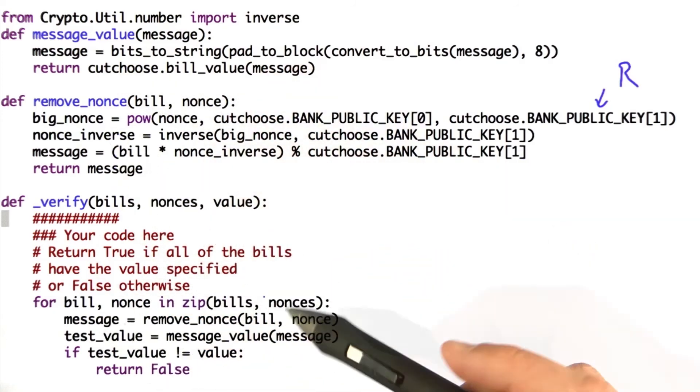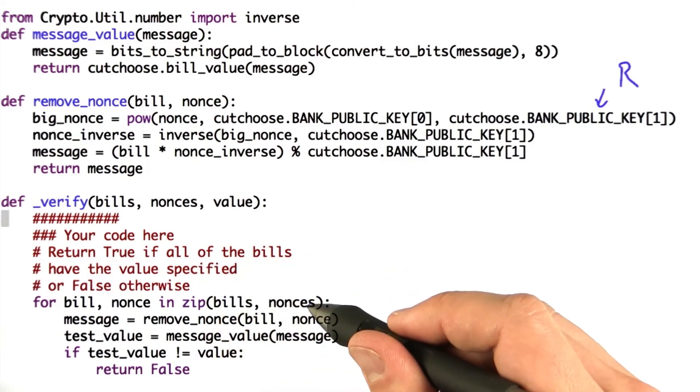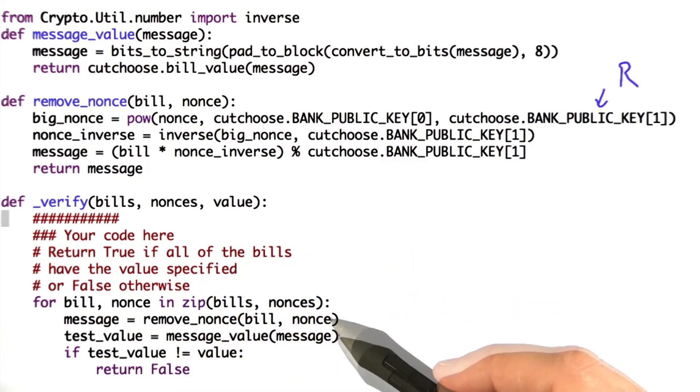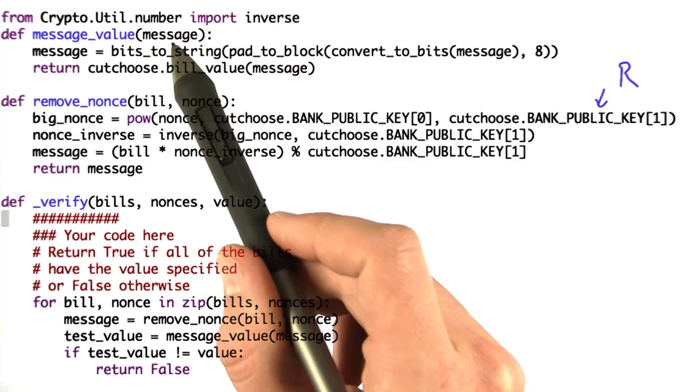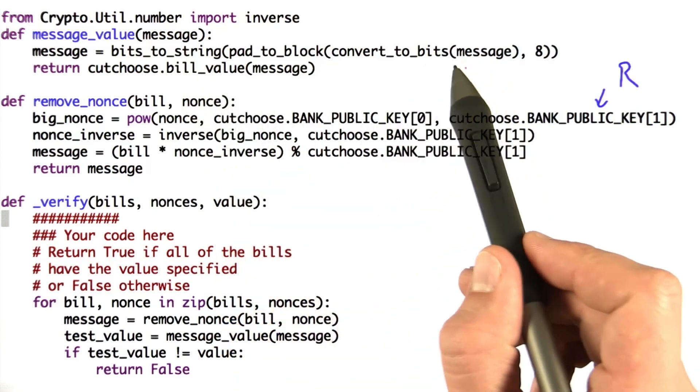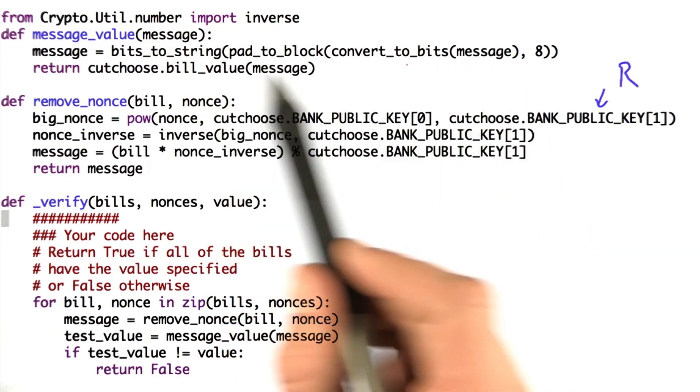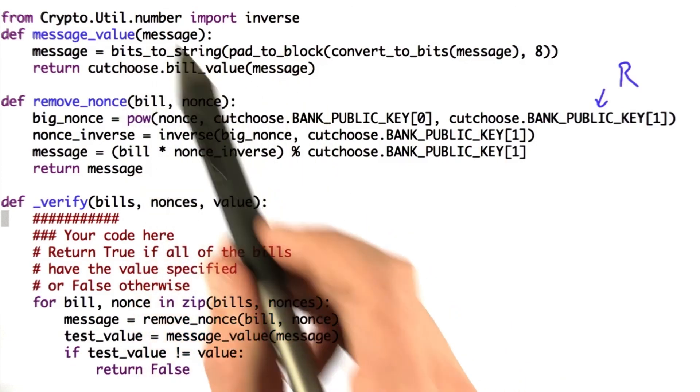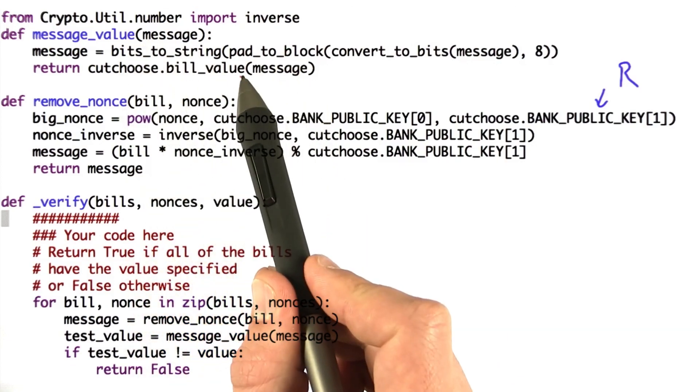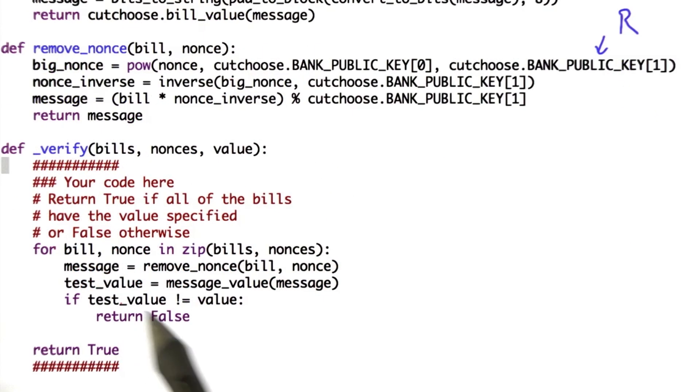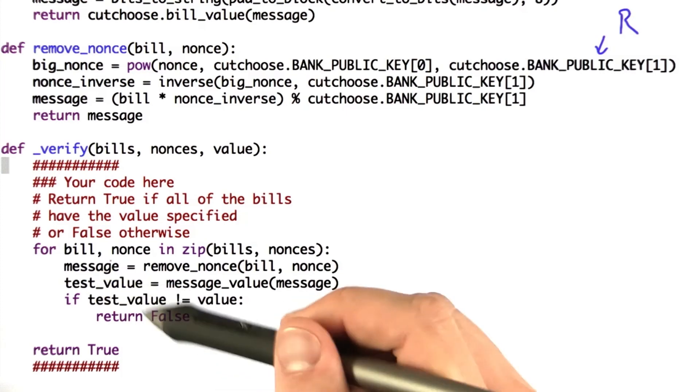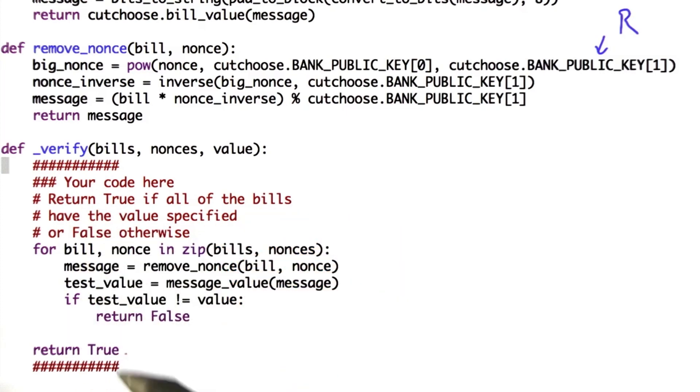So in the verify function itself, we loop through all of the bills and nonces, remove the nonce, and check the value. Message value does the conversions to change the message, which is an integer, into bits, makes sure the padding is right, and then converts the bits to a string. We then see if the test value is equal to our target value. If it's not, return false, because we don't need to verify anymore. If we've passed all of these, return true.